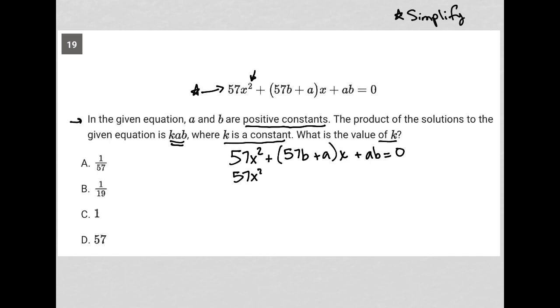This 57B plus A times X can be simplified by distributing the X across to each term. That becomes 57BX plus AX. And then plus AB comes down and equals zero.